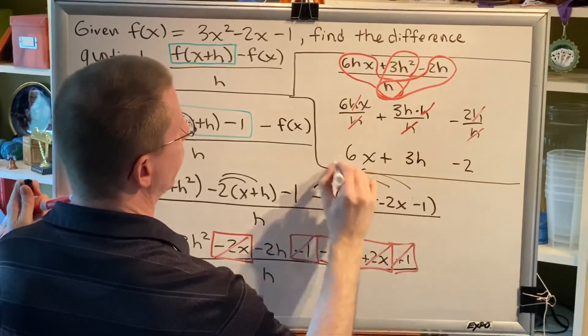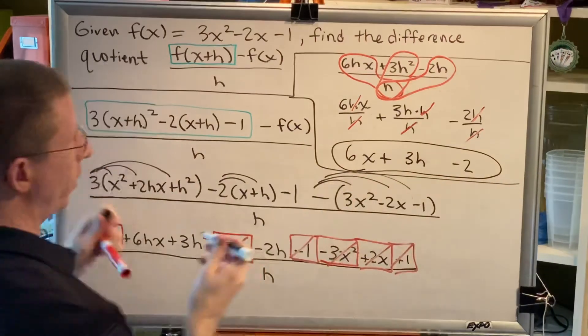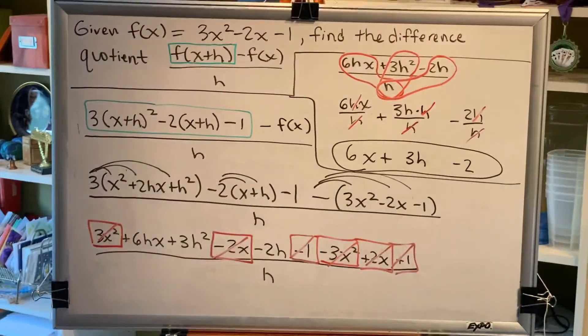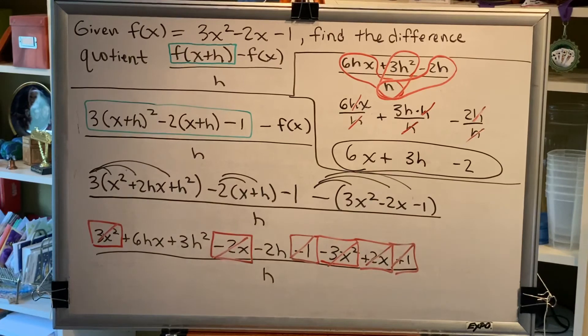So our final answer for this problem is 6x plus 3h minus 2.